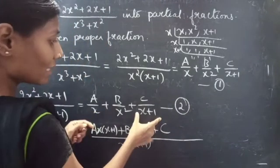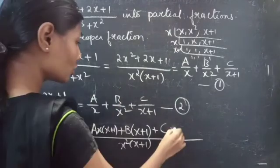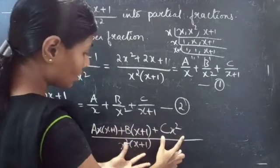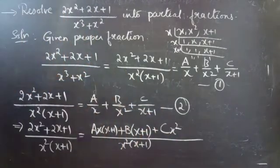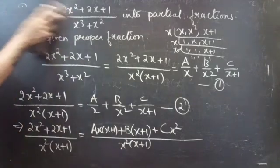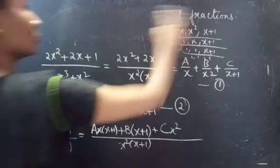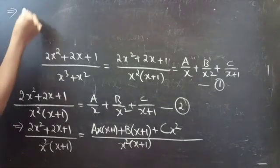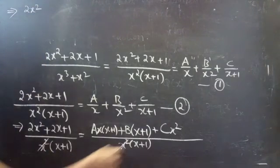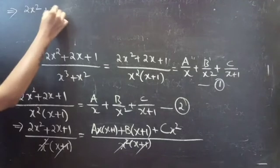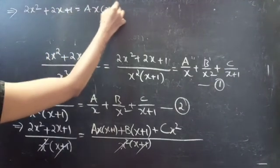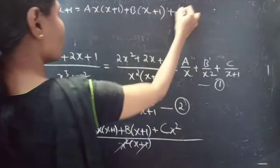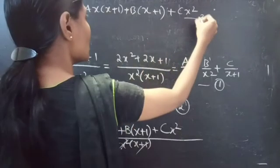Coming to the c part: you have x plus 1 in the denominator but the common denominator is x squared into x plus 1, so you need to include x squared. Then x squared cancels and you get c by x plus 1. So you will get: 2x squared plus 2x plus 1 equals ax into x plus 1 plus b into x plus 1 plus c into x squared. Consider this as equation 3.